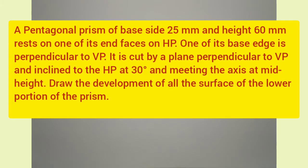So here we have to draw the development of a pentagonal prism which is resting on one of its end faces on HP. Also, one of its base edges is perpendicular to VP. The pentagonal prism is cut by a section plane which is inclined 30 degrees to HP, and the section plane passes through the midpoint of the axis. So we can draw the development of all the surfaces of the lower portion of the prism.